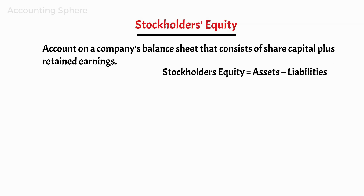As a result, stockholders' equity is frequently referred to by accountants as the difference of assets minus liabilities. Within the stockholders' equity section, you may see accounts such as common stock, preferred stock, retained earnings, current year's net income, accumulated other comprehensive income, paid-in capital, and treasury stock.